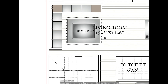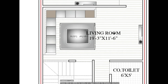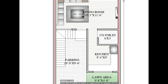Here is the living room. The size of the living room is 19 feet 3 by 11 feet 6. That means here to here is 19 feet 3, and the other dimension of the living room is 11 feet 6. So this is our living room.